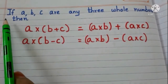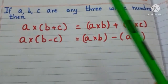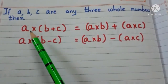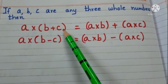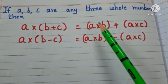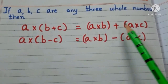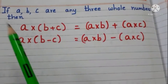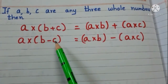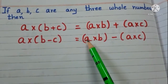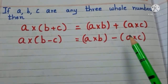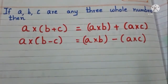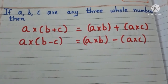Let us say, if A, B, C are any 3 whole numbers, then A into (B plus C) is equal to A into B plus A into C. And, A into (B minus C) is equal to A into B minus A into C. This is distributive property of multiplication.